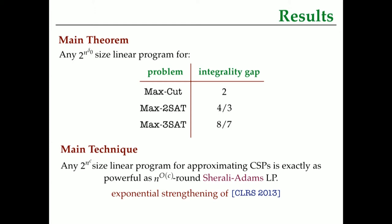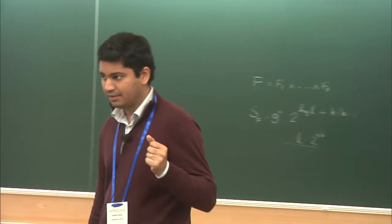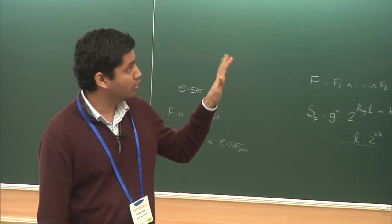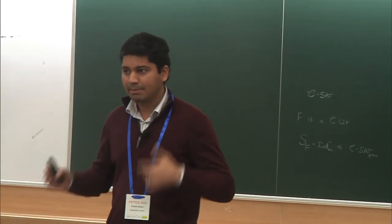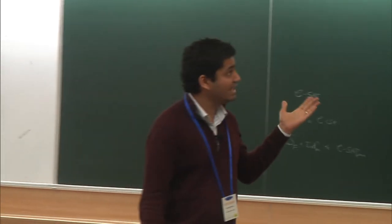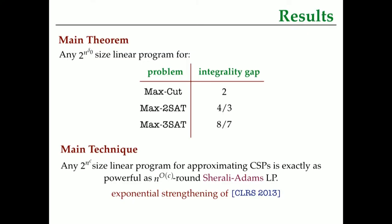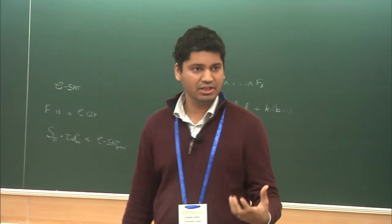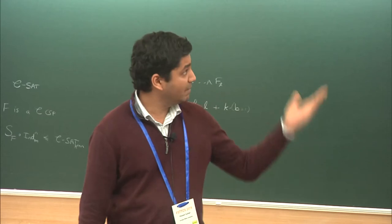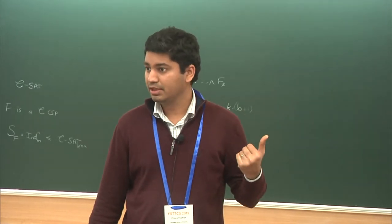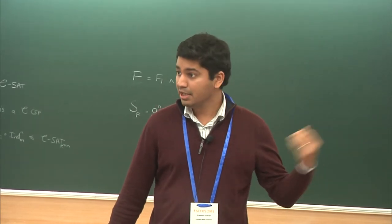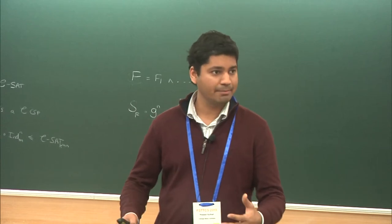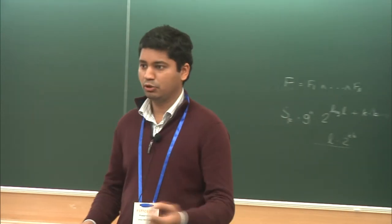Before moving ahead, I want to point out one somewhat disappointing fact about LPs. We already know that we can greatly beat the approximation ratio of 2 for max cut — we can get something like 1 over 0.878 by using semidefinite programming and hyperplane rounding. What this is saying is that if you want to do slightly better than 0.5, even just a little bit better than random assignment, you have to spend basically an exponential size budget for a linear program. This shows some gap between linear programs and semidefinite programs for basic problems like max cut.